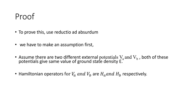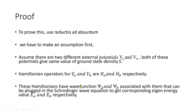Moving on towards the proof: there are two different external potentials V_A and V_B, and associated with these are two Hamiltonians H_A and H_B respectively. These Hamiltonians have wave functions ψ_A and ψ_B associated with them, which can be plugged into the Schrödinger wave equation to get the corresponding eigenenergies E_A and E_B.